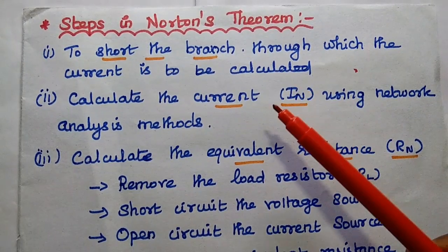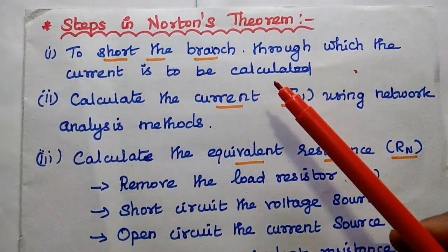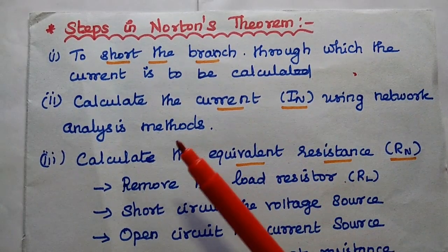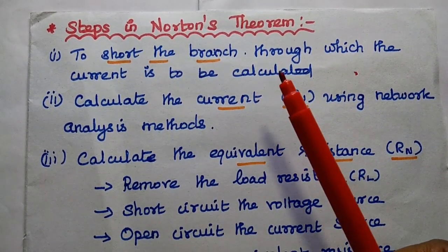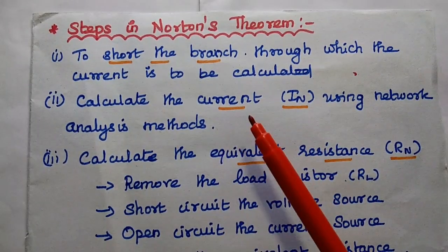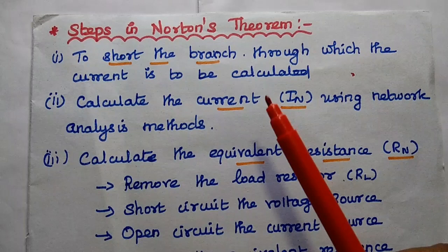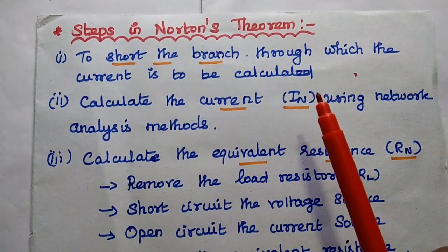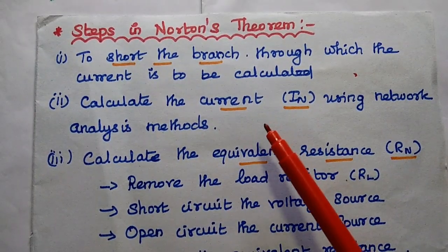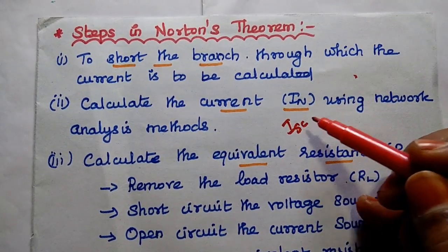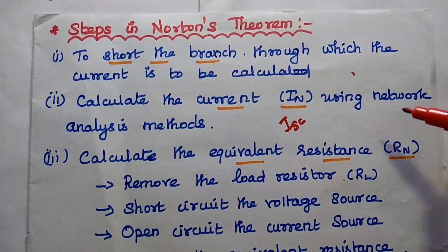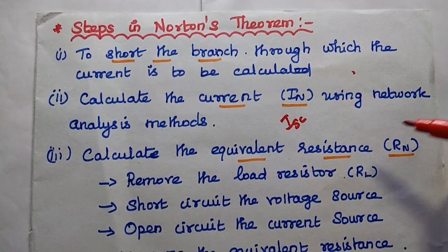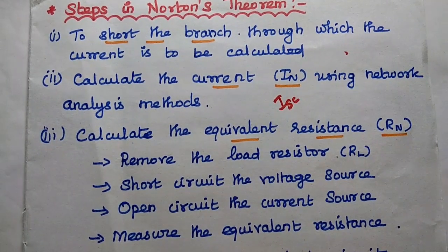Next, the steps used in Natan's theorem. The first step is to short the branch through which the current is to be calculated — that is, short circuit the branch for which we are going to calculate the current. Then calculate the current through that short circuited branch using any network analysis method. This current is known as Natan's current or short circuited current, represented as ISC. We can use nodal analysis, mesh analysis, or current division rule.